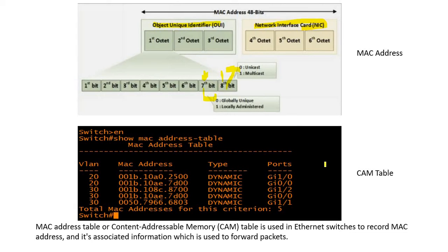Now, what information can you get through the CAM table? You can get to know the VLAN (virtual LAN), the MAC address, the type — whether it is static or dynamic — and the ports.